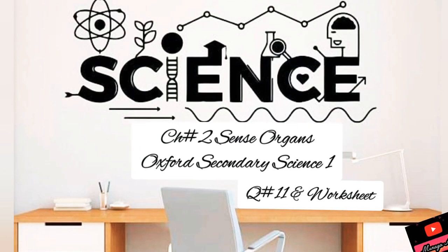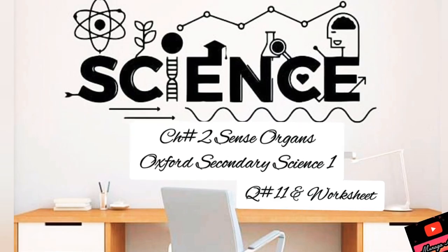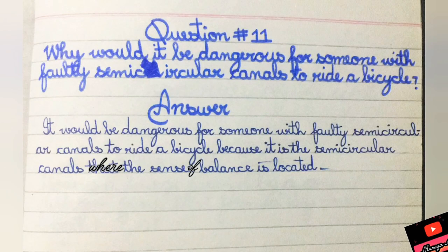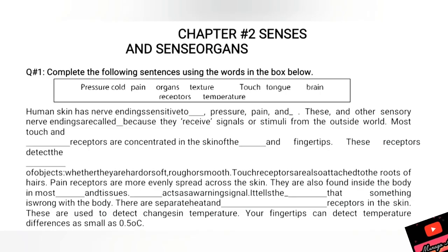Assalamu alaikum and good morning grade 6. I'm back again with the worksheet and question number 11 answer. Question number 11 is: why would it be dangerous for someone with faulty semicircular canals to ride a bicycle? It would be dangerous because the semicircular canals are where the sense of balance is located.